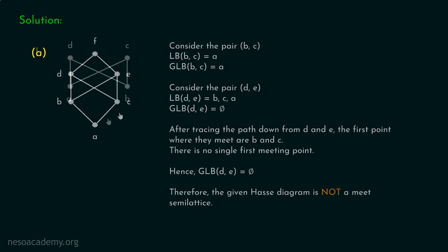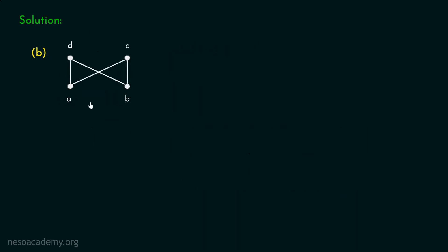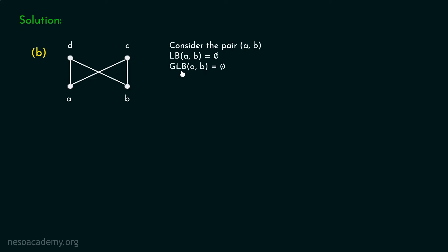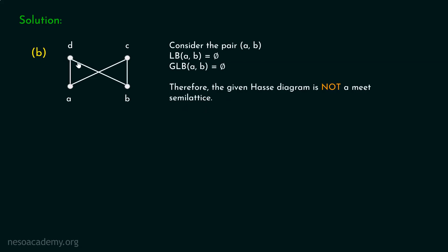Let's consider figure b. We are available with this figure and have to identify whether this Hasse diagram is a Meet Semilattice or not. Consider the pair a, b. You can clearly see that lower bounds of a and b do not exist. Therefore, greatest lower bound of a and b also does not exist. Hence, it is clear the given Hasse diagram is not a Meet Semilattice.